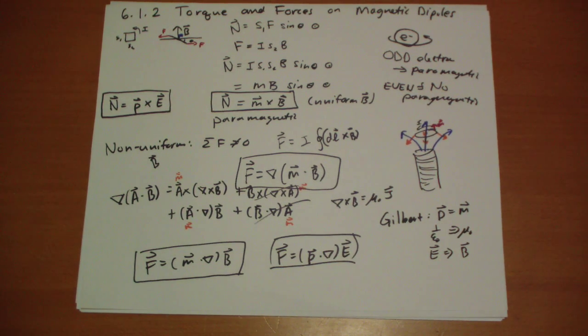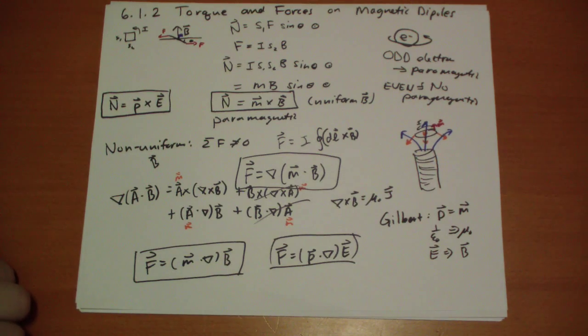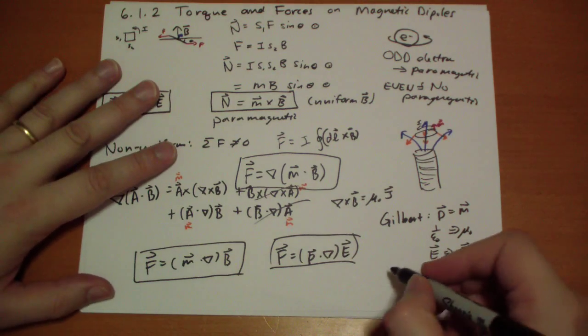However, the problem is that when you get close to the source charges—those are the finger quotes there—the Gilbert model fails dramatically in a very bad way, because it really isn't magnetic monopoles behaving a certain way. And so you have to fall back to the Ampere model.